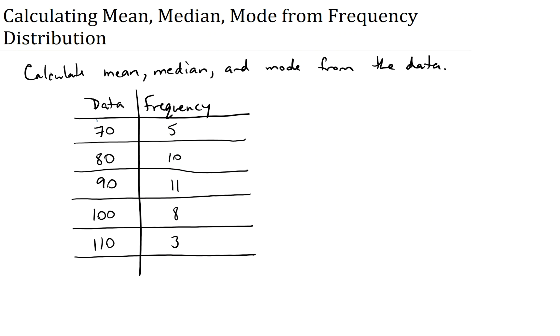All this means is, these are your data values, and frequency is how many times each occurs. So if I were to list this data, it would look like this, put it in order. I'd have a 70, and then I'd have one, two, three, four more 70s. So that would be five 70s.